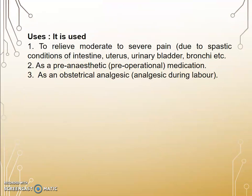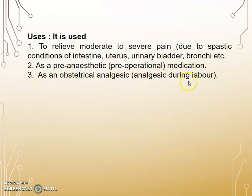Uses of Pentazocine: it is used to relieve moderate to severe pain due to spastic conditions of the intestine, uterus, urinary bladder, and bronchi; as a pre-anesthetic, pre-operative medication; and as an obstetrical analgesic during labour pain.